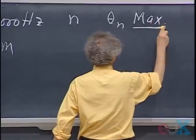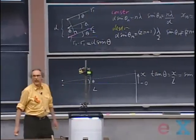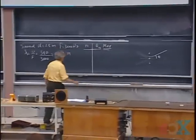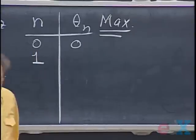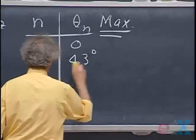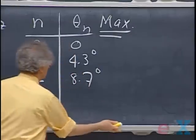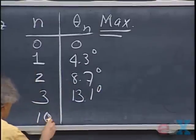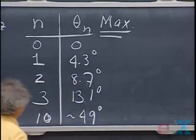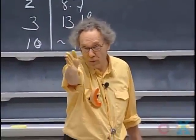I'm going to calculate the directions of maxima using constructive interference: sine(theta_n) equals n lambda divided by D. At n equals zero the angle is zero. At n equals one it's about 4.3 degrees; n equals two gives about 8.7 degrees; n equals three gives about 13.1 degrees. If you take n equals ten, you get about 49 degrees. These are where the maxima fall.